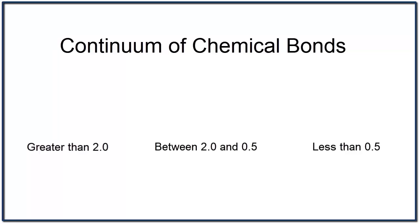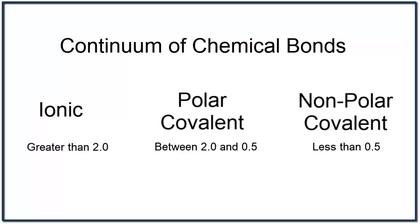Chemical bonds can be classified along a continuum. If the difference in electronegativity is above 2.0, it's an ionic bond. We consider molecules between 2.0 and 0.5 to be polar, and below 0.5 is nonpolar. These are just guides, you may be given slightly different values.